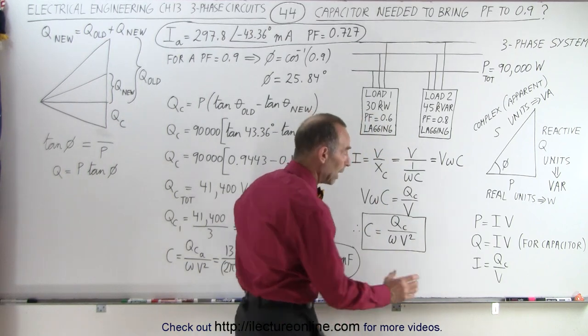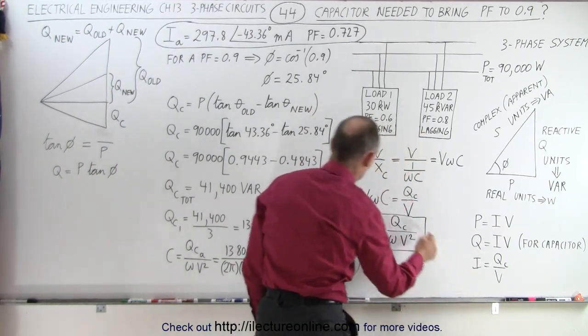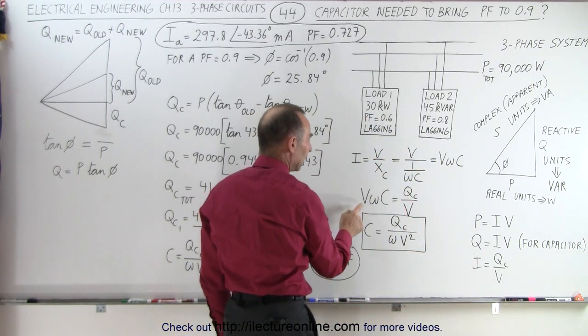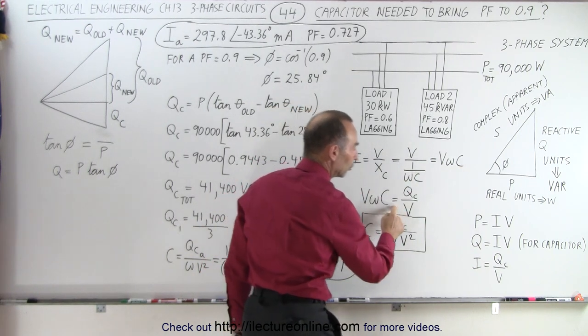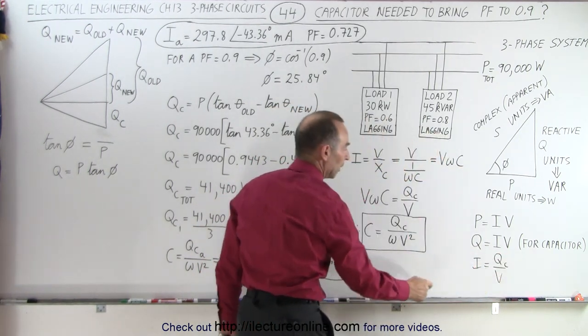If we now equate the current from this equation to the current from this equation, then we get V omega C from here, set equal to Q over V from here. Remember, Q is the reactive power of the circuit.